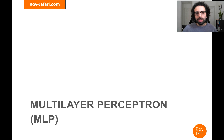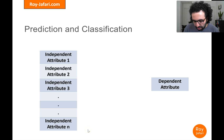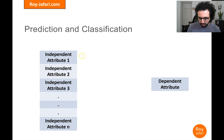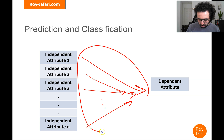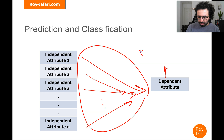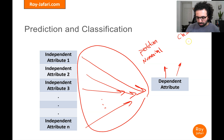This is going to be a very short video so let's get started. When we talk about the task of prediction or classification, there are a lot of similarities between them. By and large, what we are trying to do is find a relationship between the independent attribute and the dependent attribute. The only difference between prediction and classification at this high level is that the dependent attribute for prediction is numerical and for classification it is categorical.